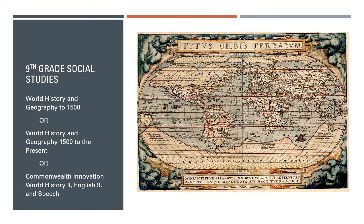Their third choice is to take Commonwealth Innovation World History 2, English 9, and Speech. This cross-curricular course offers students the opportunity to look at World History 2 — the same course as World History and Geography 1500 to the Present — using a project-based approach and working collaboratively with peers to develop a complex understanding of all three content areas: history, English, and speech. All three of these courses offer students the opportunity to take the Standards of Learning test at the end of the year.